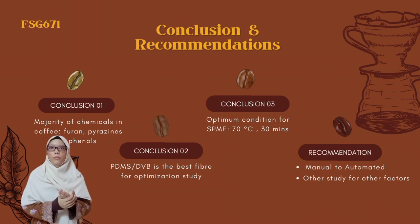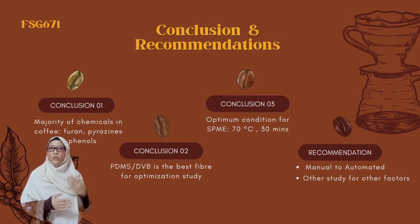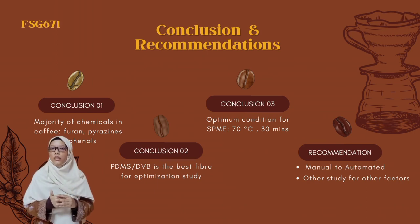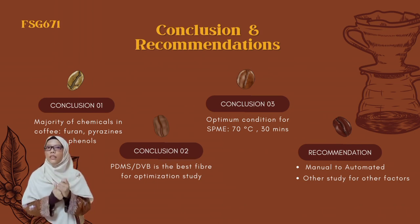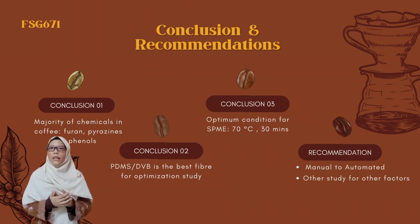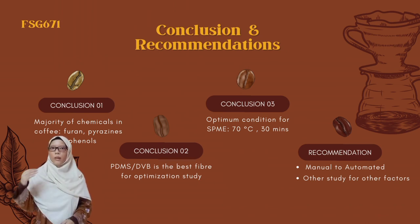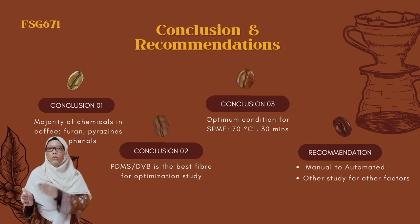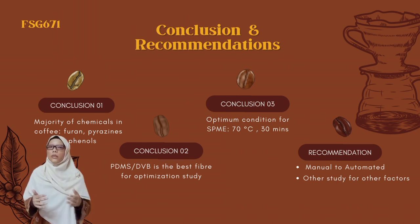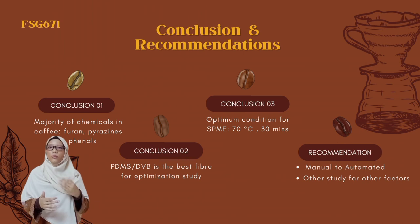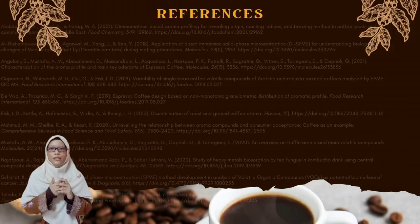In conclusion, the key contributors to coffee aroma are furan, phenols, and pyrazines. The best SPME fiber for extraction of VOCs in coffee is PDMS-DBB, with an optimal condition of 70 degrees Celsius for 30 minutes. Improvements can be made by transitioning from manual to automated SPME to reduce human error, and other SPME parameters such as pH, salt addition, and desorption time can also be studied.